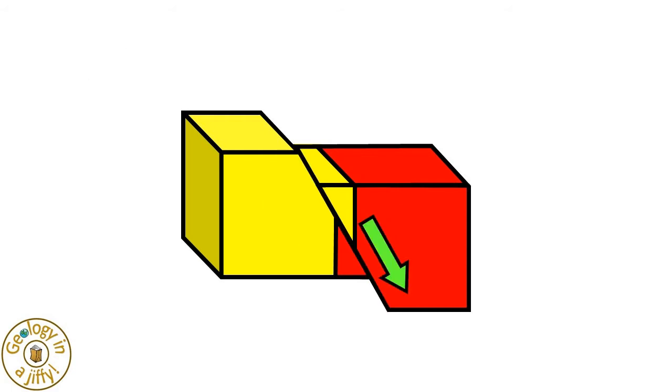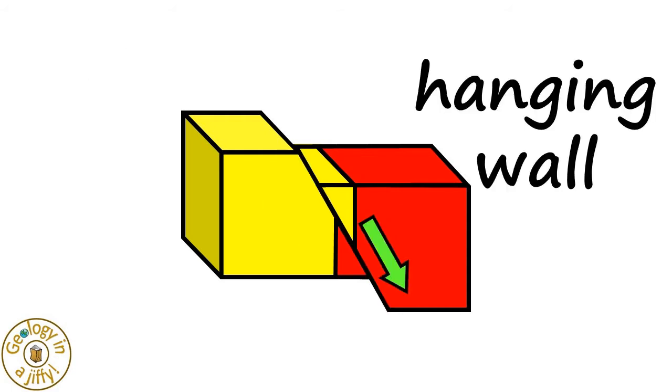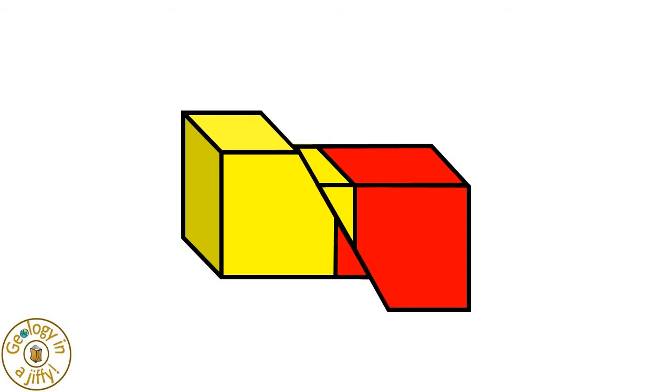The block that moves downwards is called the hanging wall, and the block that moves upwards is called the foot wall.